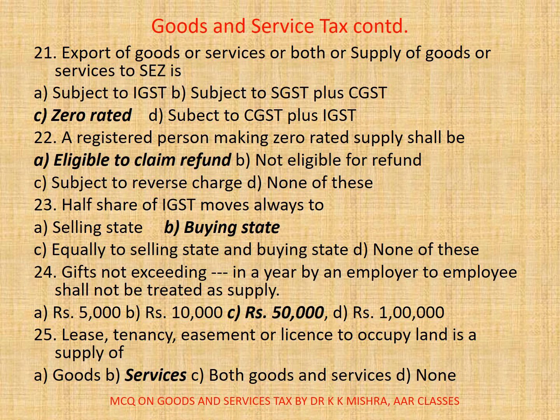Question 25: Lease, tenancy, easement or license to occupy land is a supply of — A. goods, B. services, C. both goods and services, D. none. Here correct option is B: services.